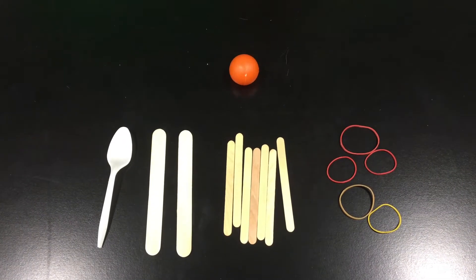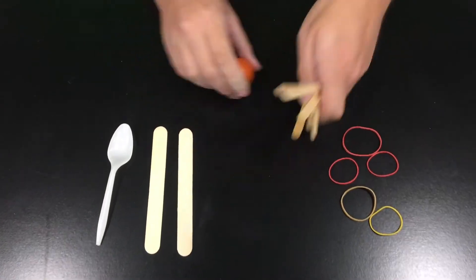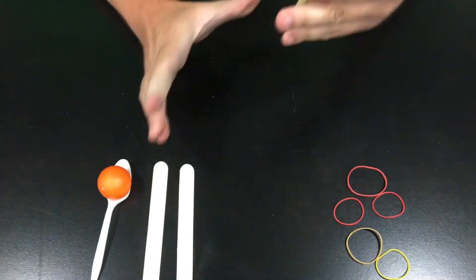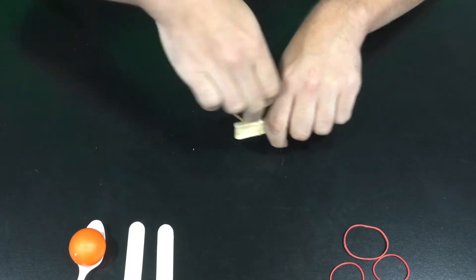All right, what you're going to do first is take those small craft sticks and attach them together using rubber bands, placing a rubber band at each end of the bundle. There's one and two.